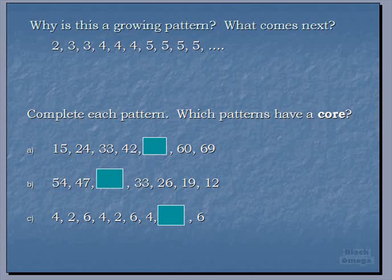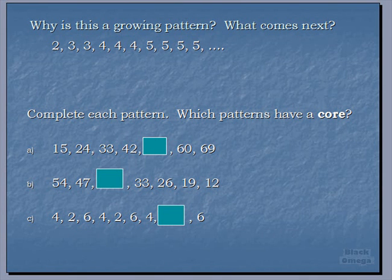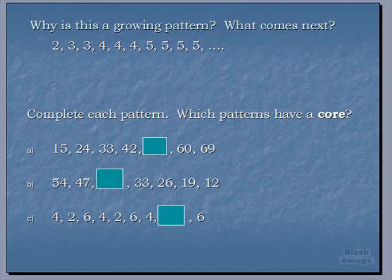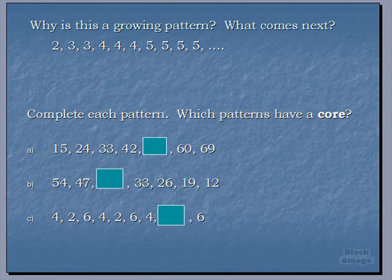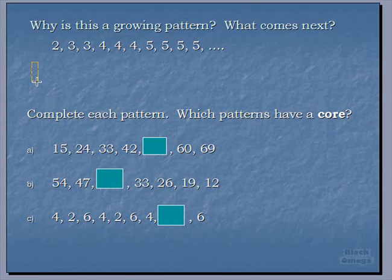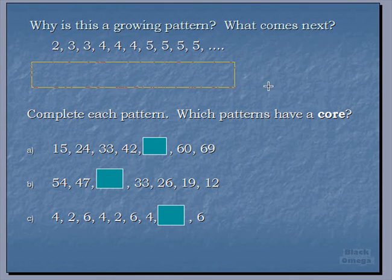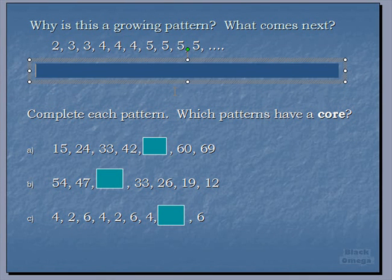If the 2, 3, 3 kept repeating, so the next part of our pattern would be 2, 3, 3 again, then it would be a repeating pattern because it would have a core. So this one is a growing pattern, and why? Because a growing pattern gets bigger in a predictable way. We can figure out what would come next. So let's do that together.